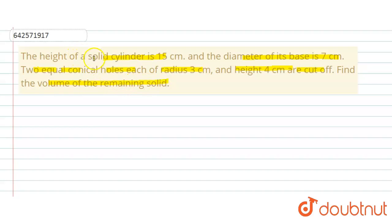Okay, so for this question we will first of all find the volume of the solid cylinder, and then we will subtract the volume of two conical holes. So here the given information is that